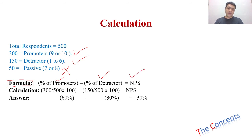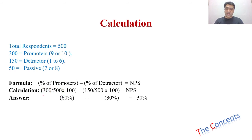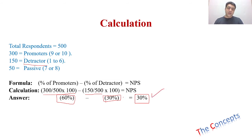Looking at our data: we have 300 promoters out of 500 total, so 300 divided by 500 multiplied by 100 gives us 60 percent. On the other hand, 150 were our detractors, so 150 divided by 500 multiplied by 100 equals 30 percent. Applying the formula: 60 percent minus 30 percent gives a result of positive 30 percent — meaning most customers will be recommending your product or service to other people.